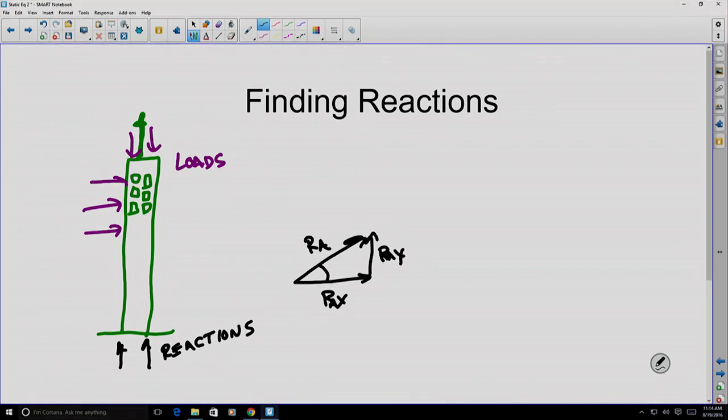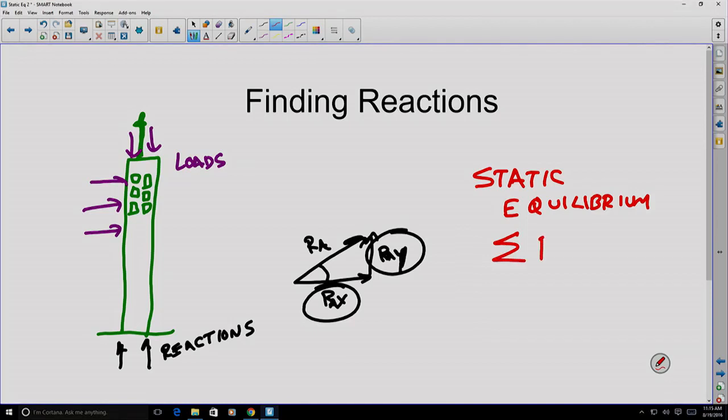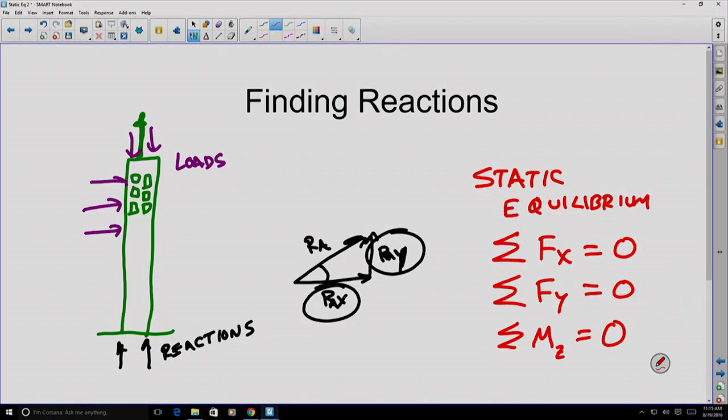Geometry might supply some of the information, like the angle or the ratio between slopes. We also have three equations of static equilibrium to help us relate our loads to our reactions. The sum of forces in the x-direction needs to be zero, the sum of forces in the y-direction needs to be zero, and the sum of moments around some point in that plane also needs to be zero if we're working in two dimensions.